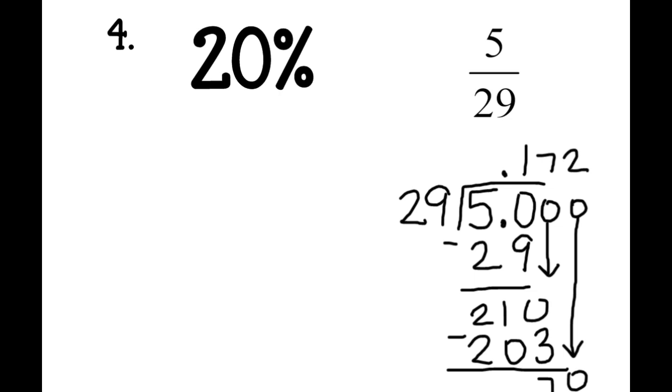So 5/29 as a decimal would be 0.172. So comparing that, or making that a percent, we're going to move it over two places. So comparing 20% to 17.2%, 20% is greater than 17.2%.